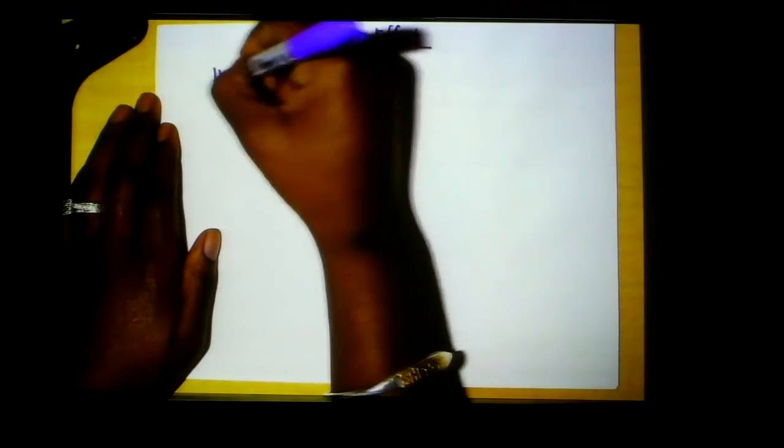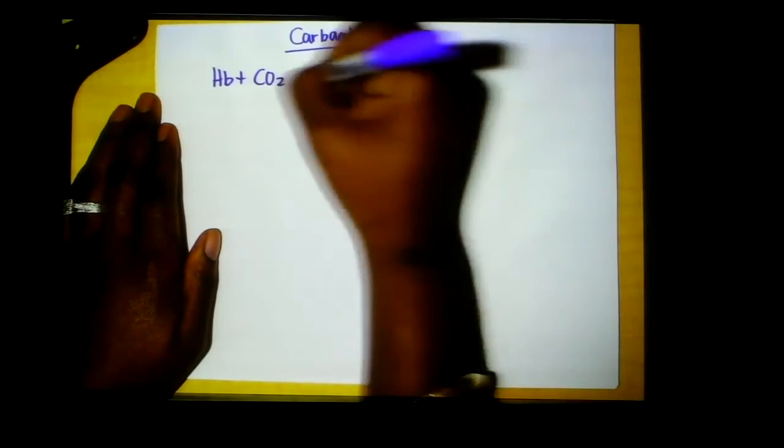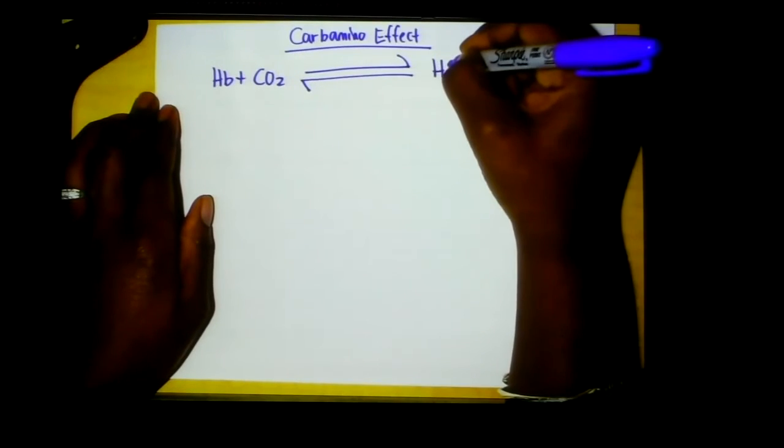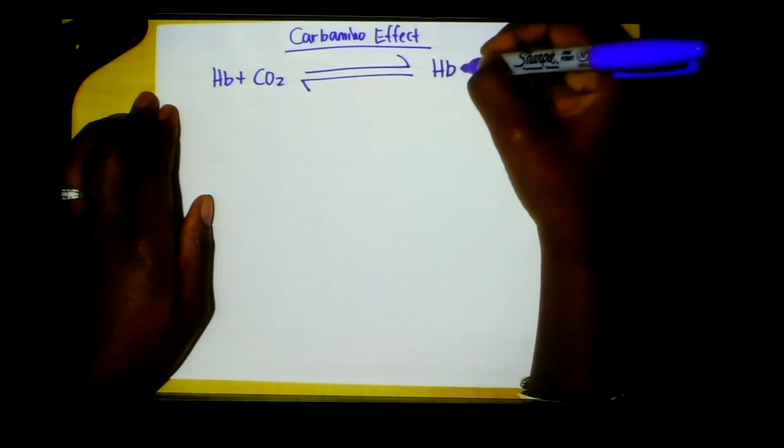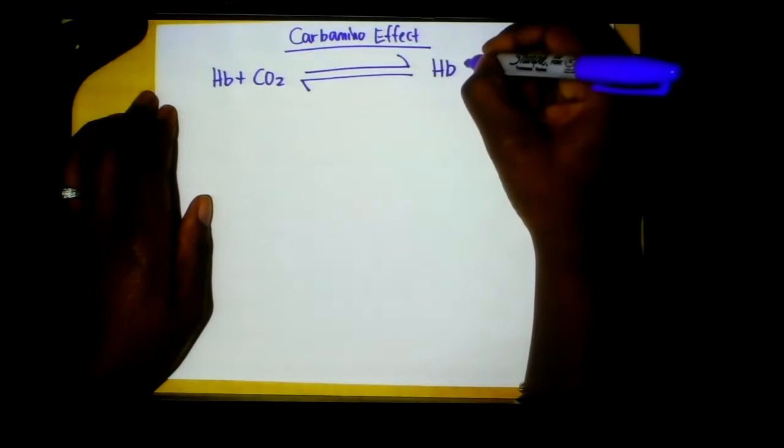So the carbamino effect is where we look at the fact that hemoglobin had this possibility to bind CO2, and again, this is a reversible reaction, so we can bind it on. This gives us carbamino hemoglobin.